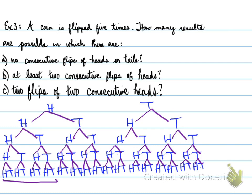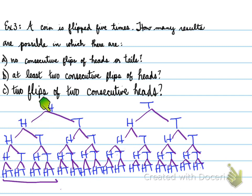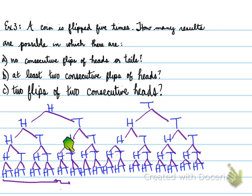All branches starting with double heads are not possible — as soon as you have two heads in a row, all following branches from those two are negated. Looking at heads, tails, heads — we're okay so far, but then heads again means the rest of that branch is wrong. However, heads, tails, heads, tails, heads — following this branch all the way down — works, so that one is valid.